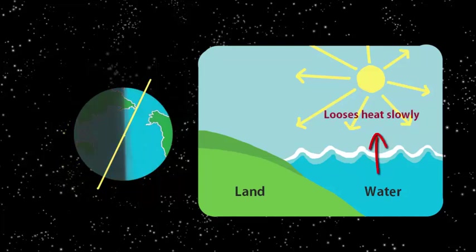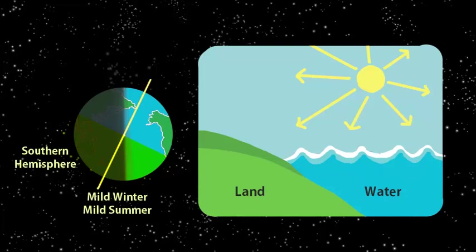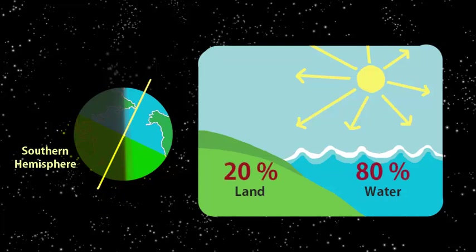Water also loses heat slowly. So the large water bodies in Southern Hemisphere, which got heated up slowly in the summers, lose heat slowly during the winters. This leads to milder winters and summers in the Southern Hemisphere. And all this is due to the much larger percentage of water in the Southern Hemisphere.